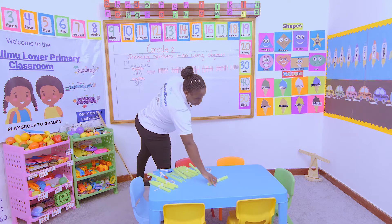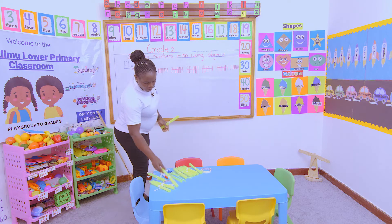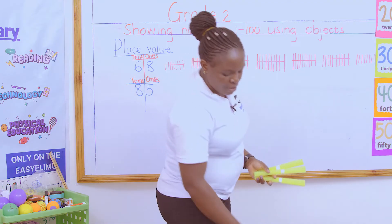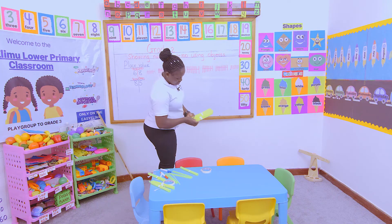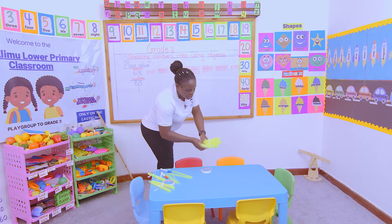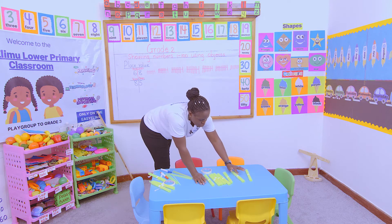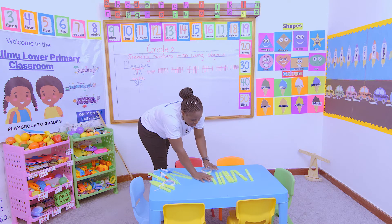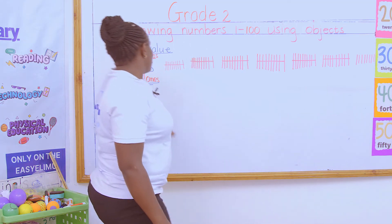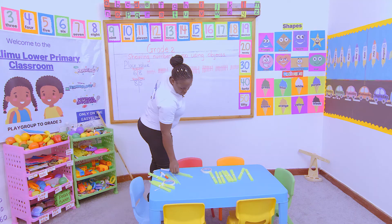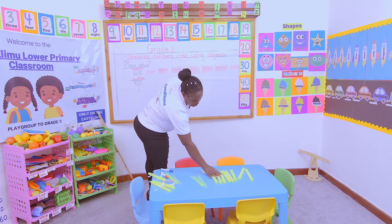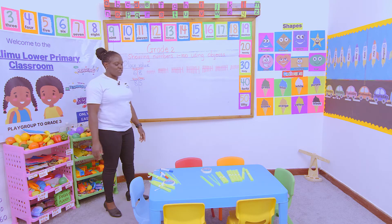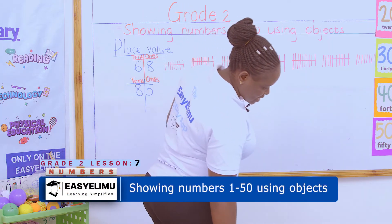I'll go back and count: one, two, three, four, five, six, seven, eight bundles. Then how many are representing the ones? Five single straws. So I'll say one, two, three, four, five. And up to there I will have represented my number 85 using the bundles of sticks.